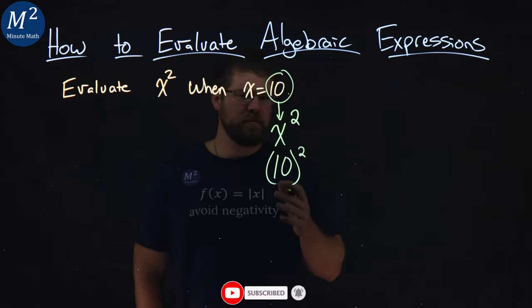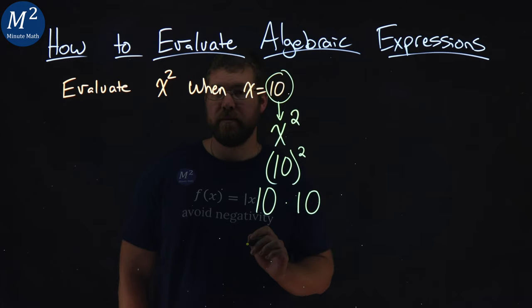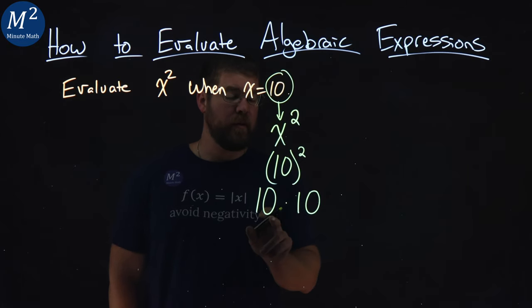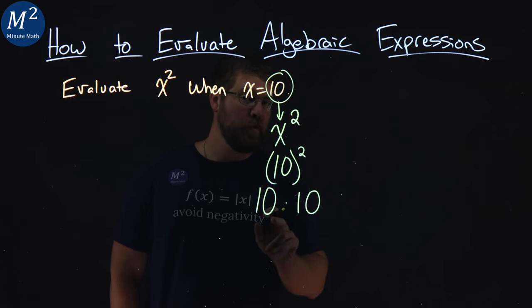Now, if you know what 10 squared means, it's a 10 times a 10. That's what squared means. Take the same number and multiply it by itself one more time. So it's all of two numbers.